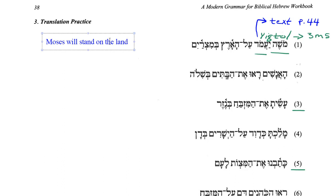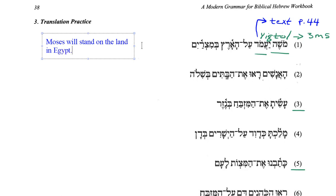It could also mean 'the earth,' but I'm thinking it's probably 'the land' here because of the next word — b'mitzrayim. Mitzrayim is Egypt, and the bet is the preposition meaning 'in, by, with' — I'll say 'in' here. So: Moses will stand on the land in Egypt. That's number one.